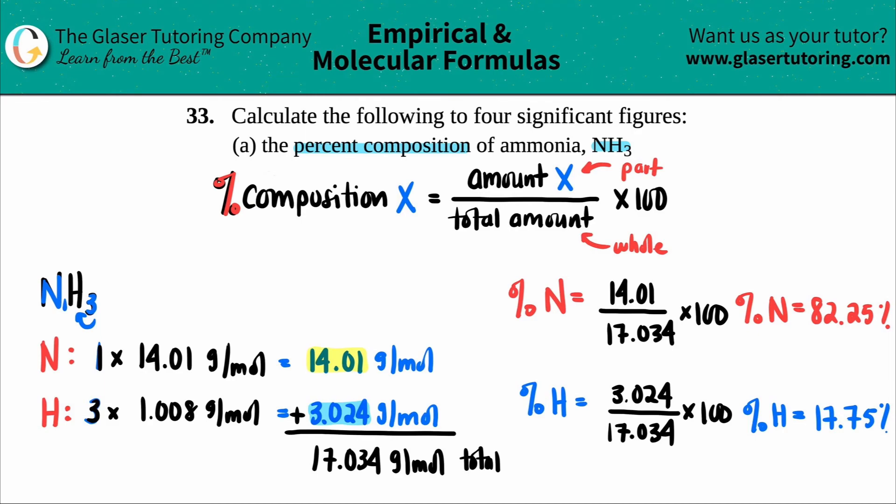There are your two answers. Percent comp for nitrogen, way more percent nitrogen in ammonia by mass than hydrogen. Makes sense because nitrogen weighs way more than hydrogen does, but that's it guys.